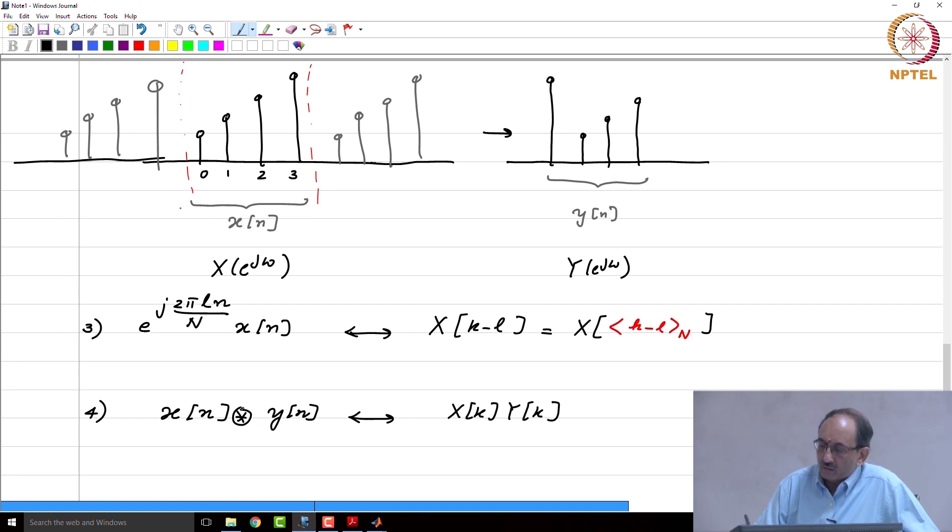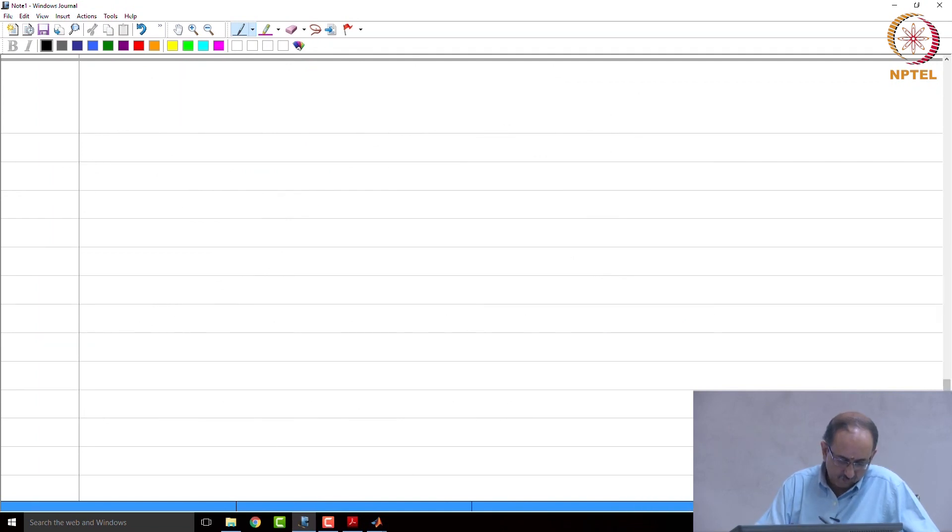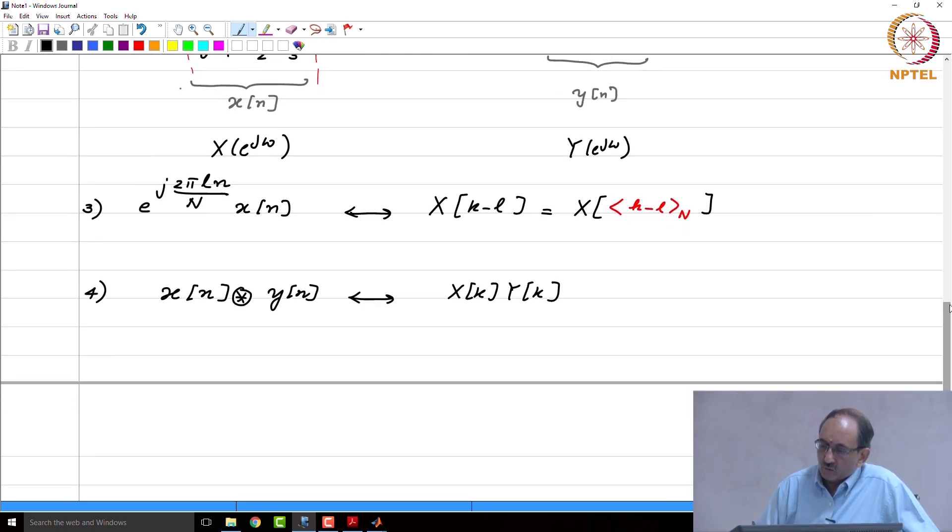Once we are done with the properties, we will talk about circular convolution in more detail. So, if you convolve in the time domain, you multiply their transforms. Convolution is now circular rather than linear. Similarly, if you multiply in the time domain, you convolve in the other domain. The other domain also is periodic and hence the convolution also has to be periodic convolution or circular convolution.